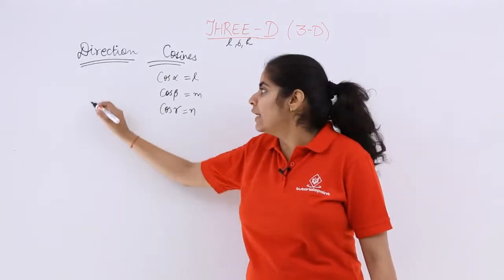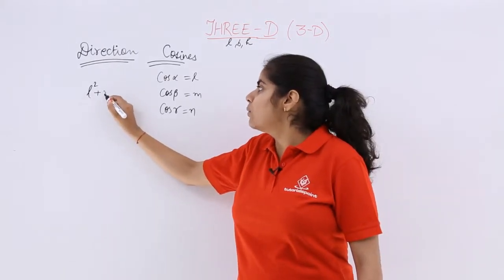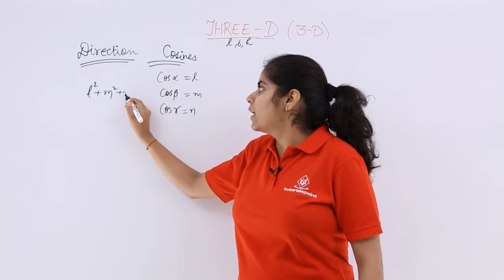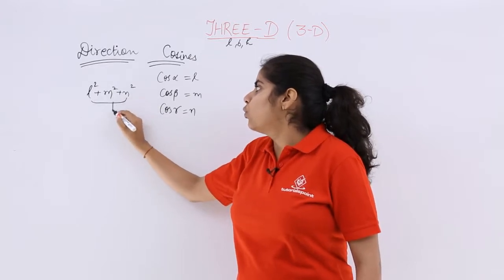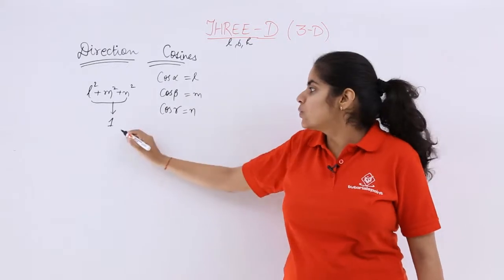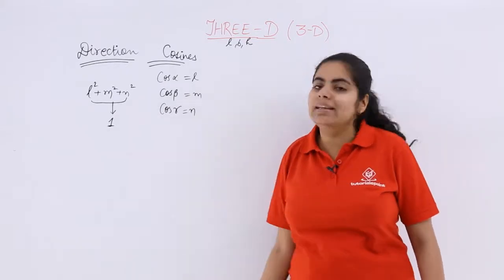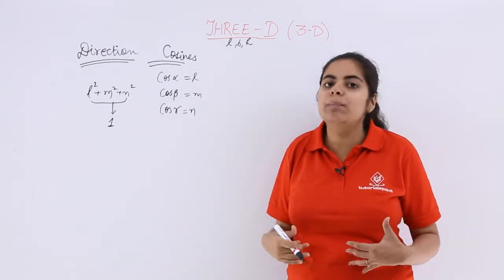And there is also one relation which is widely followed which is L square plus M square plus N square. The whole total is 1. So direction cosines are like this L, M, N and their squares sum up to 1.